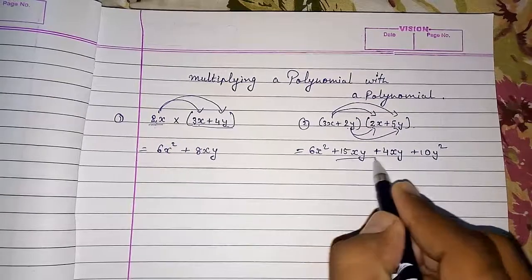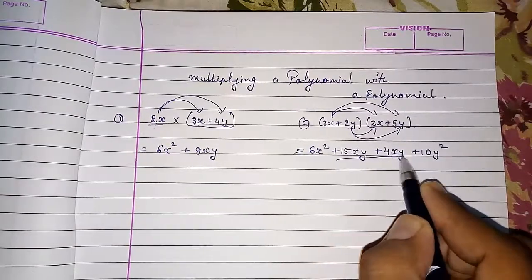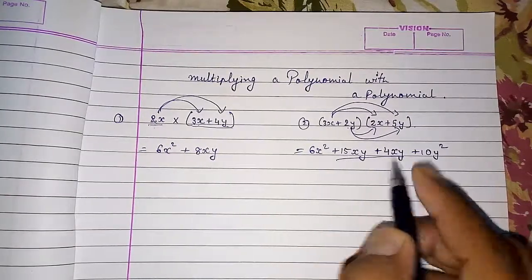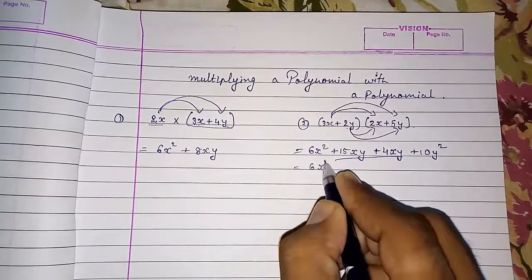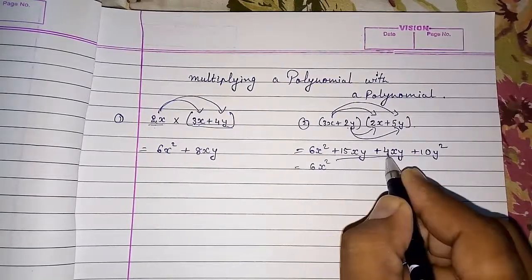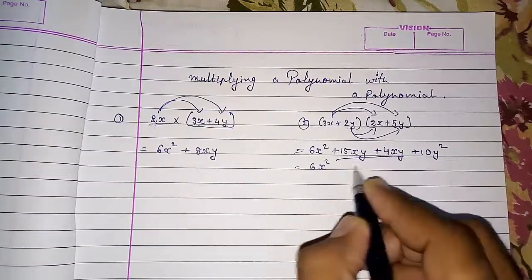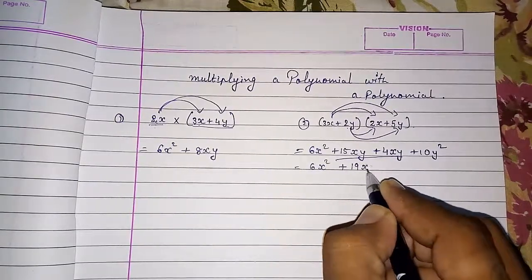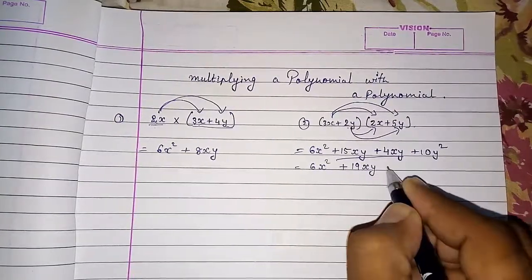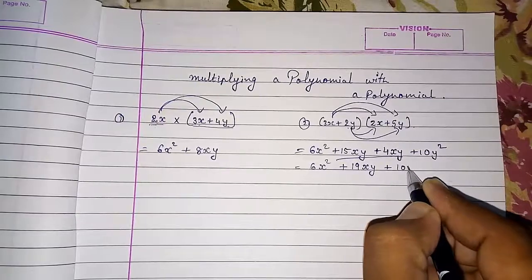Now here these two are like terms: 15xy and 4xy. So we have to add them. So: 6x square plus 15 plus 4, that is 19xy, plus 10y square.